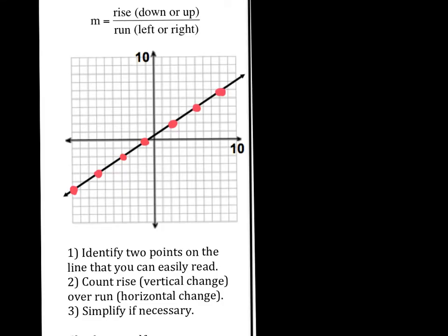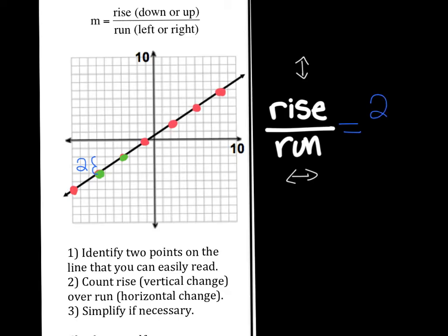Now we want to choose any two points on the line that we can easily read. So I'm going to choose this one and this one. And I'm going to count my rise over my run. My rise is how much I move up or down, and my run is how much I move left or right. So if I start at the left green dot, I need to move up two boxes in order to get on the same line as my green dot. Then I need to move to the right three boxes in order to be on the same line as my point and return to my line. So I went up one, two, so my rise was two, and I could fill that in over here. And then I moved over one, two, three. So I'll fill in a three for my run. That means that my slope is two-thirds. I can't simplify that, so I leave it just as it is.